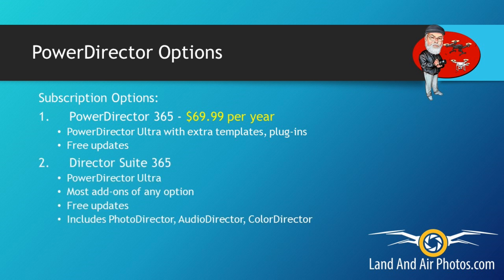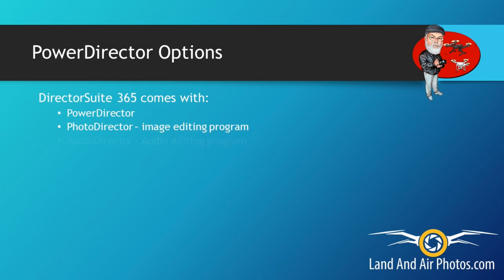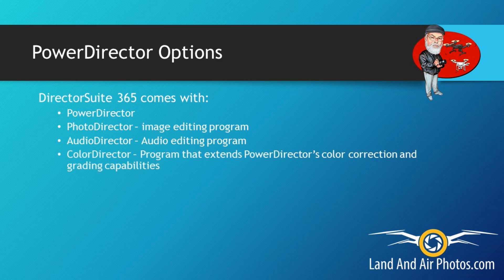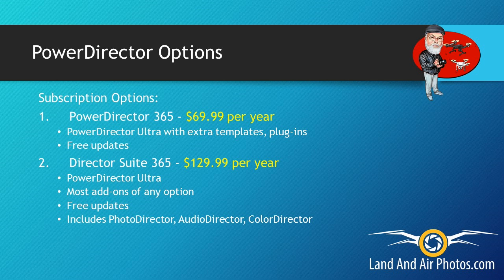The second subscription option is called Director Suite 365. It includes everything you receive with PowerDirector Ultimate and throws in more add-ons and plugins than any other package. It also includes three more programs: PhotoDirector for editing pictures, AudioDirector — an audio editing program — and ColorDirector, which significantly increases your ability to work with color grading over the base PowerDirector program. You get all of that for $129.99 per year, or $10.83 a month.